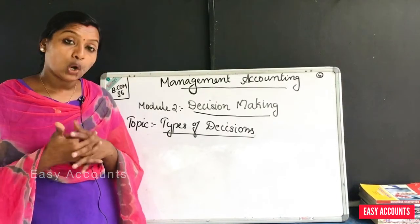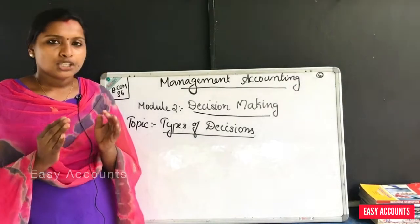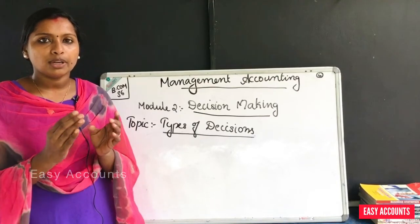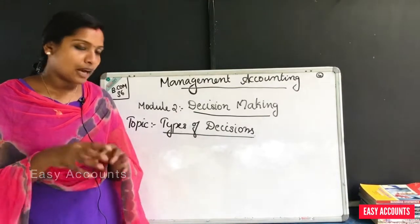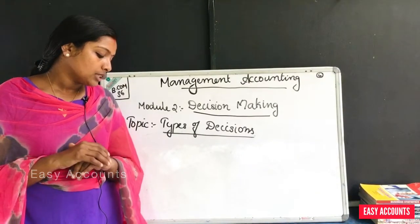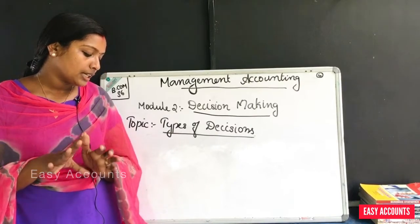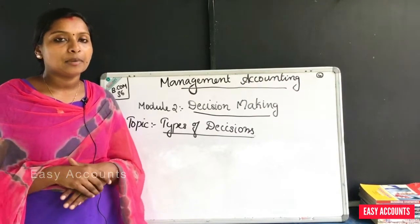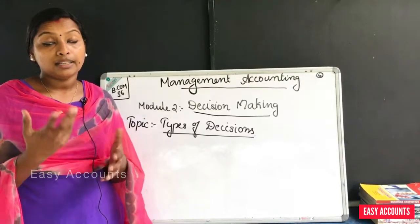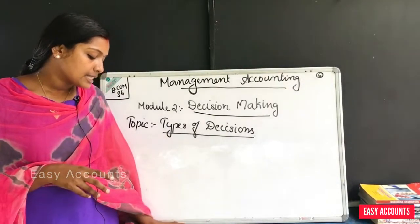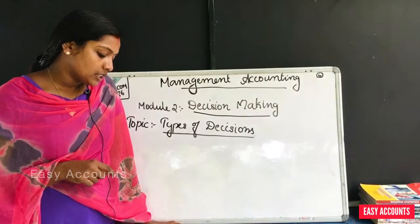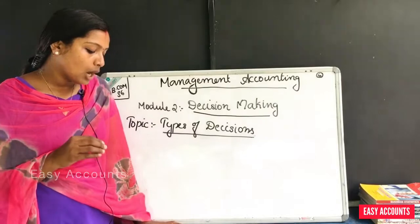Short-run and long-run decisions: short-run decisions require predicting the outcome in a short period. Long-run decisions look at the long-term outcome. Next are technical decisions and managerial decisions. Technical decisions are concerned with the process through which inputs are converted into outputs.